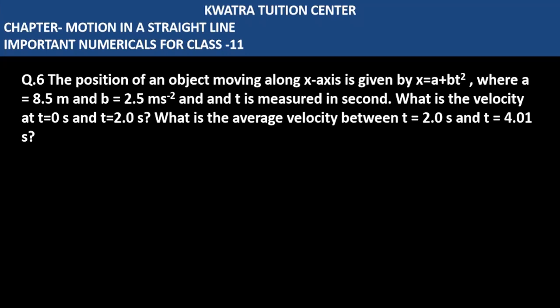Let's start with question number 6. It says the position of an object moving along x-axis is given by x equals a plus bt square.